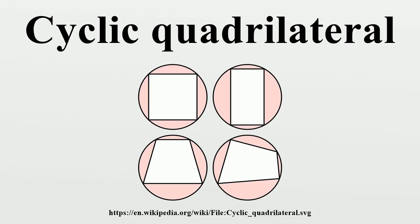Equivalently, a convex quadrilateral is cyclic if and only if each exterior angle is equal to the opposite interior angle. Another necessary and sufficient condition for a convex quadrilateral ABCD to be cyclic is that an angle between a side and a diagonal is equal to the angle between the opposite side and the other diagonal. Ptolemy's theorem expresses that the product of the lengths of the two diagonals e and f of a cyclic quadrilateral is equal to the sum of the products of opposite sides. The converse is also true.